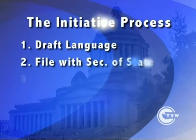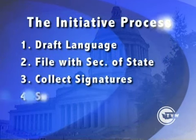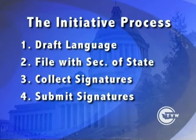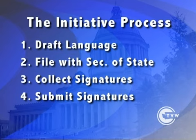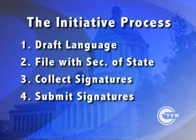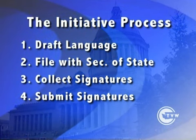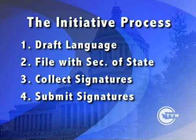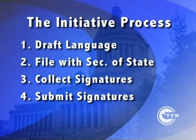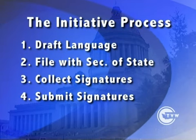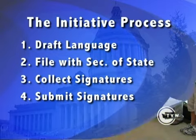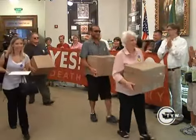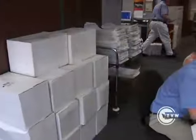Thinking of a topic for an initiative is easy, but actually qualifying one for the ballot is difficult. Proponents first must draft a proposed initiative and file it with the Secretary of State's office. After a ballot title is issued, they circulate petitions and collect signatures from voters. To make the ballot, proponents must collect signatures equal to at least 8% of the turnout at the last gubernatorial election — currently nearly 225,000 signatures. Signatures must be turned in in early July, four months before the general election.